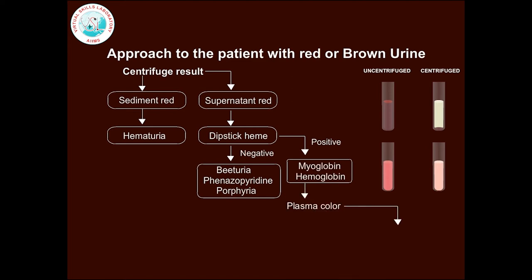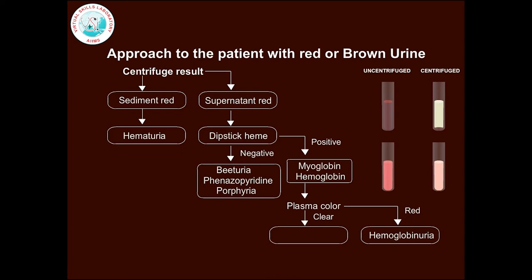If the plasma colour is also red, it indicates hemoglobinuria. And if the plasma is clear, it indicates myoglobinuria.